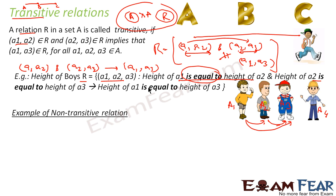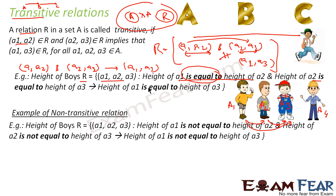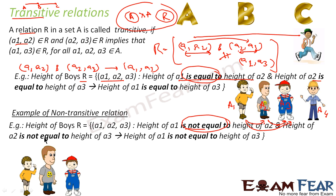Now I will give an example of a non-transitive relation. Consider the 'not equal to' relation. Suppose the height of A1 is 4 cm, A2 is 5 cm, and A3 is also 4 cm. Since 4 is not equal to 5, the pair (A1, A2) is in the relation. I took 4 for A3 specifically — I will explain why shortly.